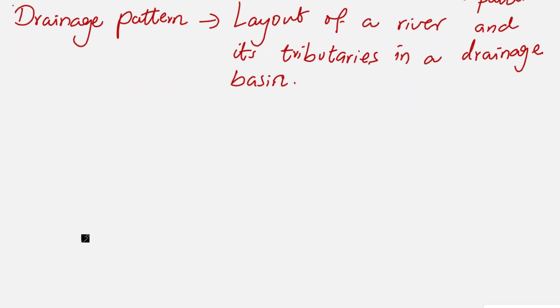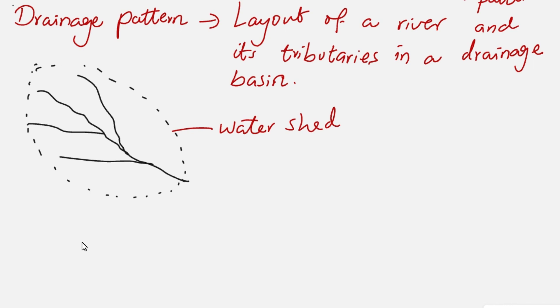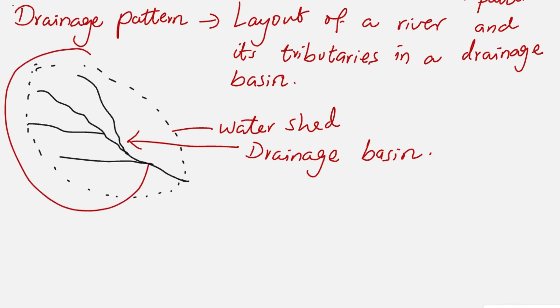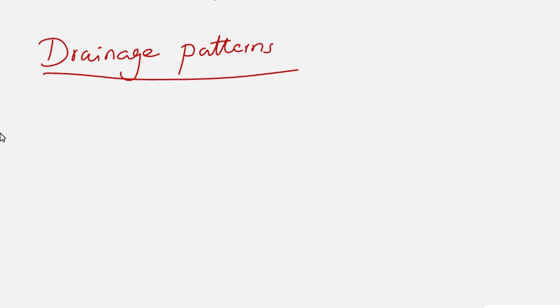Now let's look at how many drainage patterns there are and which ones they are. But before that, let's look at a simple drainage pattern where we have a river and its tributaries. The area which marks the drainage basin is called a watershed — it is the point which separates one drainage basin from another. Inside this watershed we have the drainage basin. The different patterns formed by rivers and tributaries within drainage basins are what we refer to as drainage patterns.